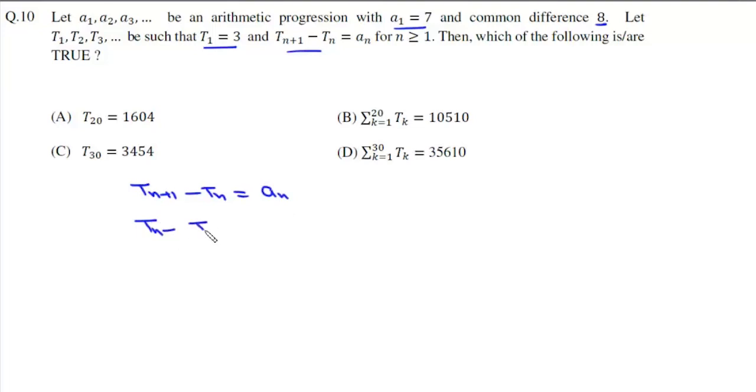Now Tₙ - Tₙ₋₁ will be aₙ₋₁, and the same way T₂ - T₁ will be equal to a₁. Now if we add them all, then all these terms will cancel.